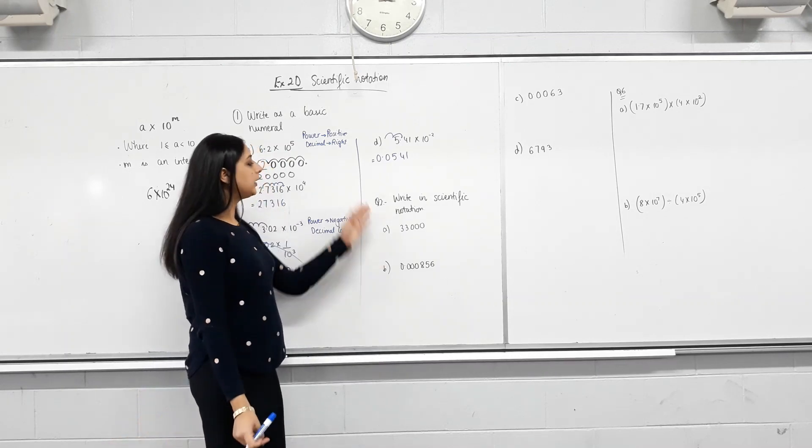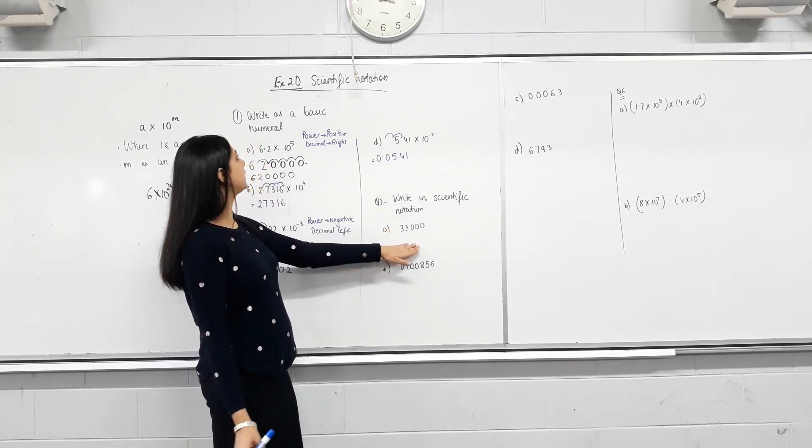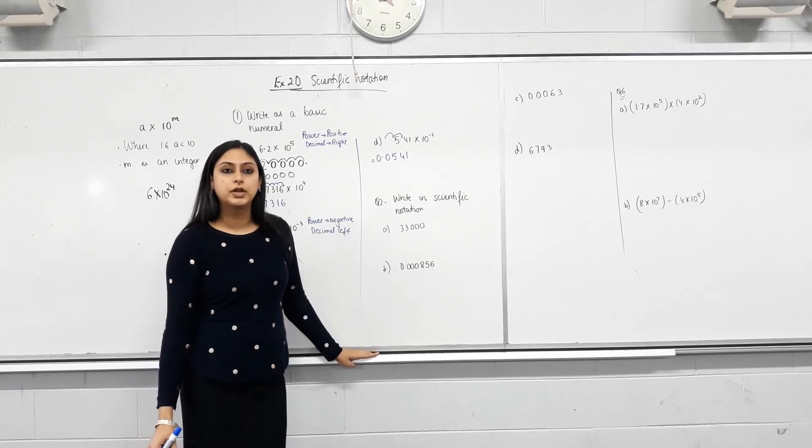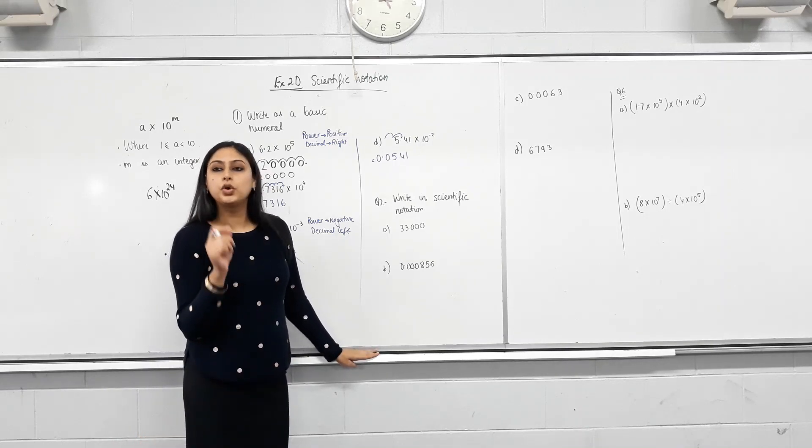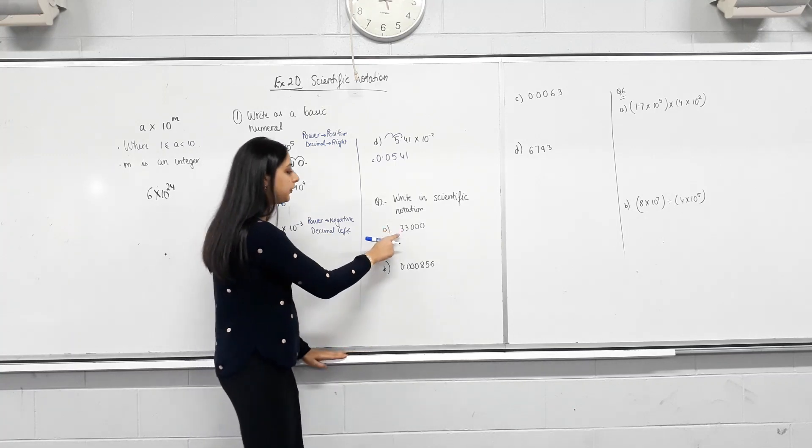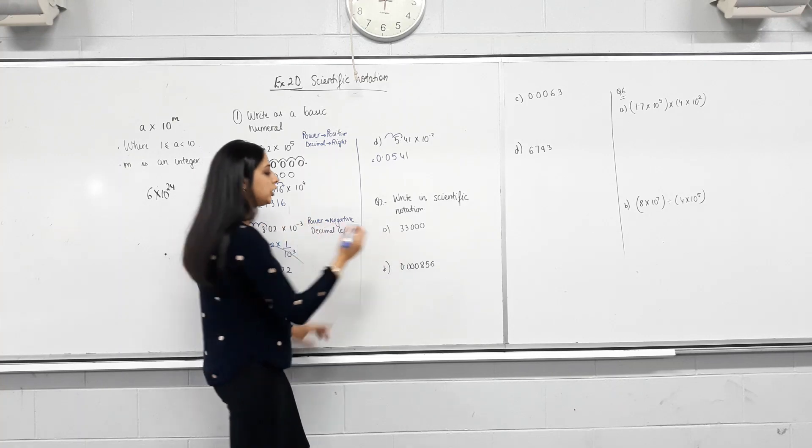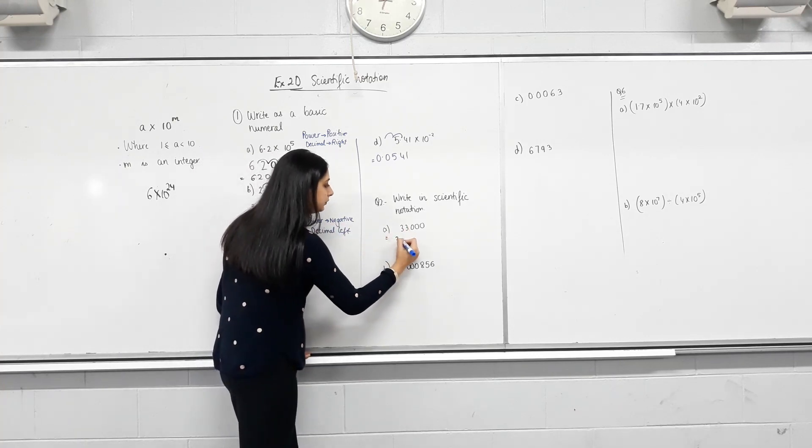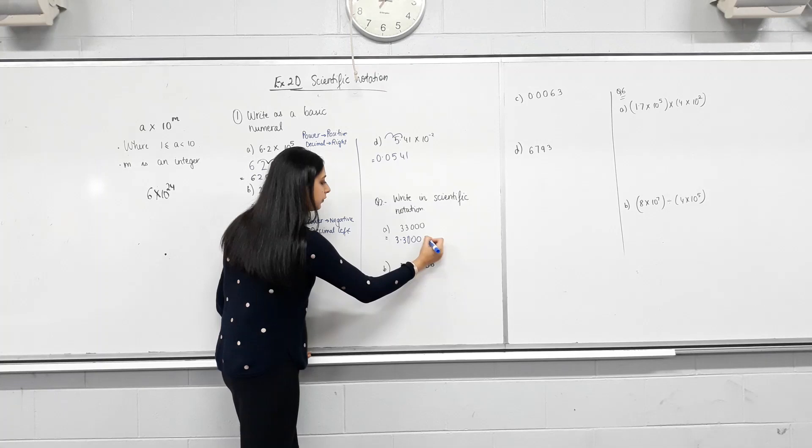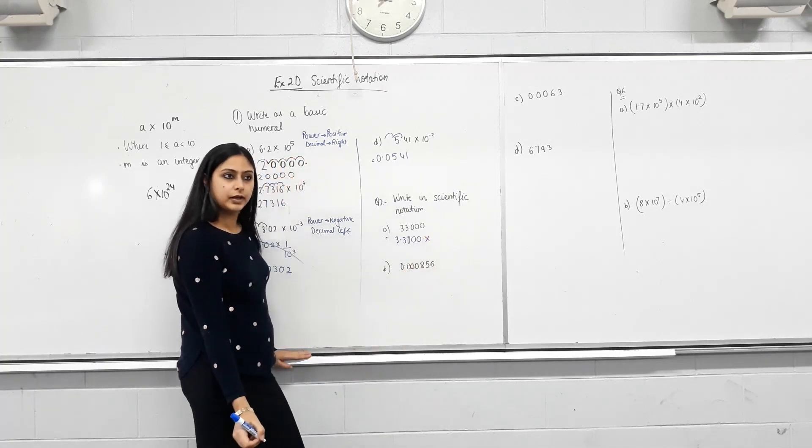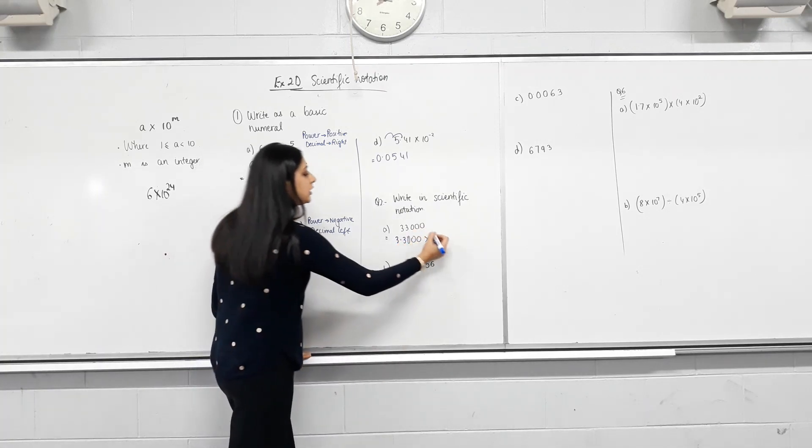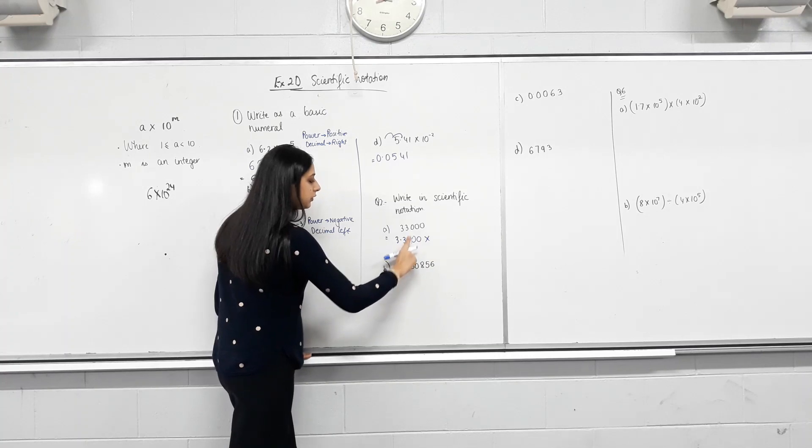Now, how do we convert from a basic number, a numeral, into the scientific notation? So put the decimal after the first non-zero number. So what's the first non-zero number in 33,000? Isn't it this three? Yes. Yes. So you put the decimal here. Okay? Now, do I need these three zeros? No. No. Because it's after the decimal. Yes. Right?